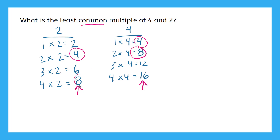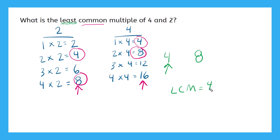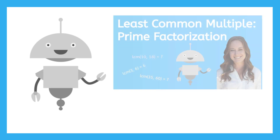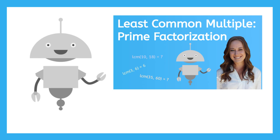So I have common multiples. Now I want to know what's the least, or smallest, common multiple. My common multiples are four and eight — which is the smaller value? Four is smaller than eight, so my least common multiple is equal to four. Now we know the definition of least common multiple and one method to find it. Join me in the next video, "Least Common Multiple: Prime Factorization," to learn a new method. Have fun and remember to always be clever!